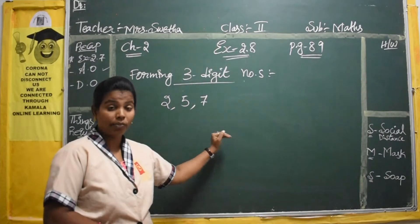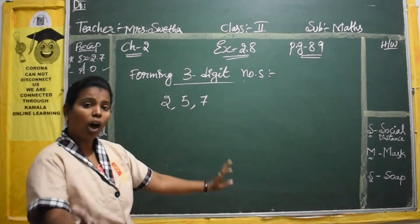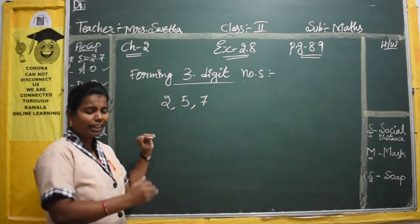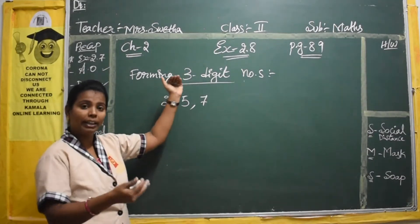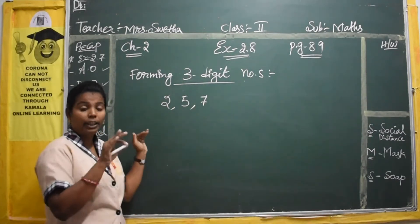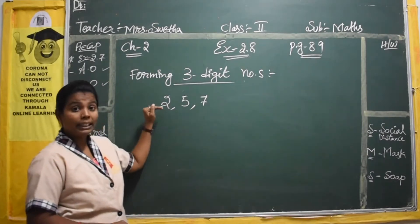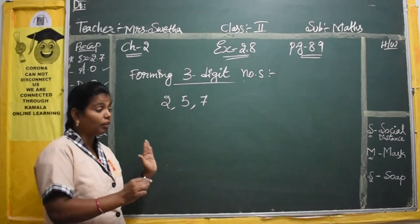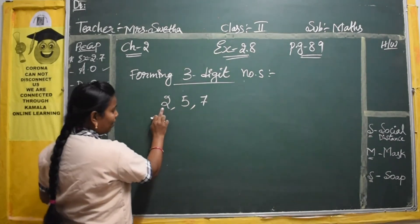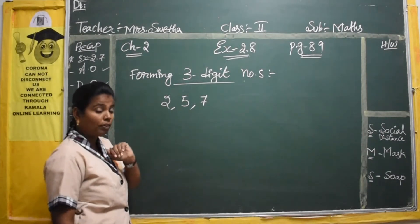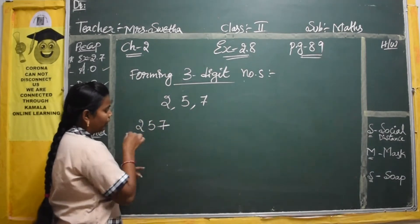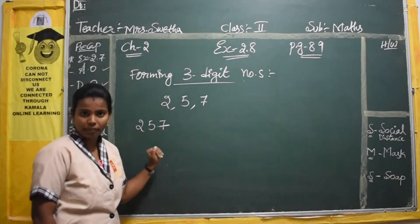It is a very easy method. If you concentrate, you can understand it well and do the exercise easily. With 2, 5, 7 — the first set of numbers: simply remove the commas and write them together. So 2, 5, 7 becomes 257. That is the first set of numbers.